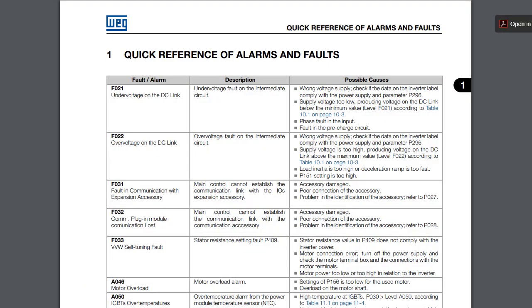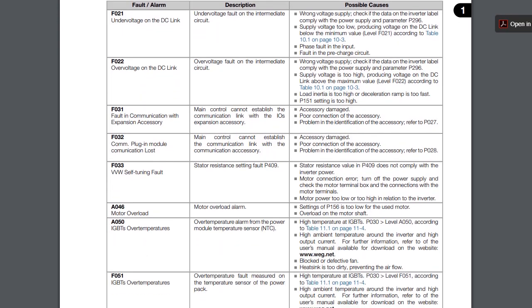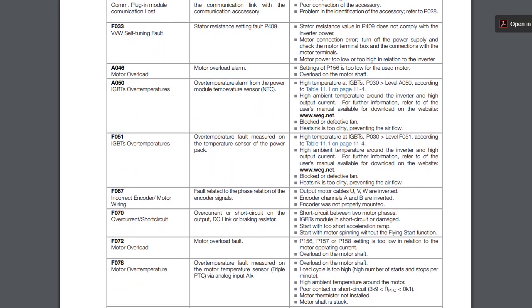In the programming manual, there is a quick reference chart that lists all of the possible faults and alarms. Notice that the faults and alarms are in numerical order, not alphabetical order, and the numbers are unique. The motor overload alarm is 46 while the fault is 72 for example. That way you can't accidentally look up the wrong one. I really like that.